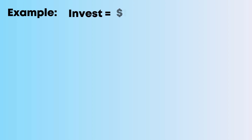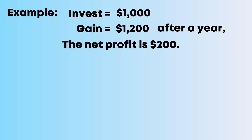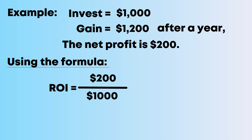For example, if you invest $1,000 in a project and gain $1,200 after a year, the net profit is $200. Using the formula, ROI equals 200 divided by 1,000 multiplied by 100, which equals 20%.